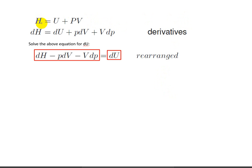We're going to take the enthalpy equation, and we're going to take the derivative of it. So we have dH is equal to dU, and then we're going to take the full derivative of p times v.